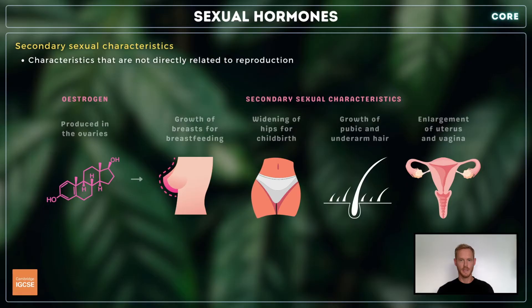In girls, these characteristics include the growth of breasts, widening of the hips, and the growth of pubic and underarm hair. Additionally, the uterus and vagina increase in size, preparing the girl for potential pregnancy.